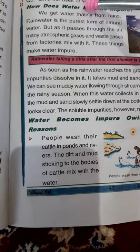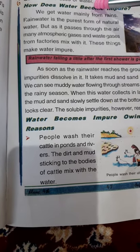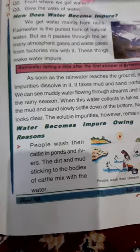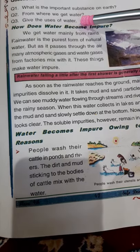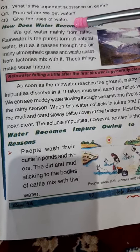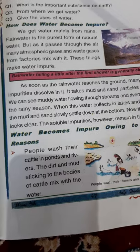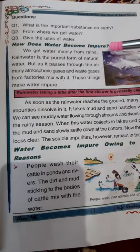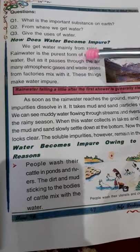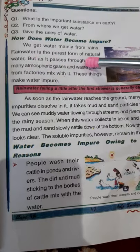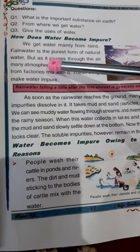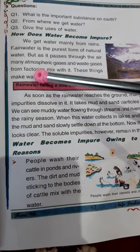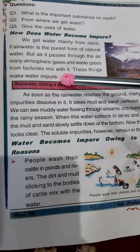We get water from taps, rivers, ponds, etc. We use water for washing, irrigation, and drinking. Rain water is the purest form of natural water, but as it passes through the air, many atmospheric gases and waste gases from factories mix with it, making the water impure.